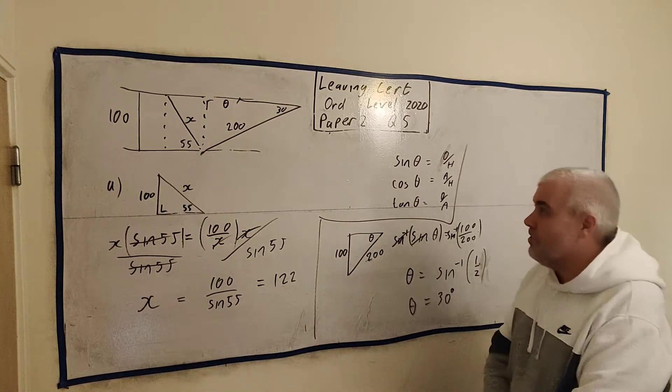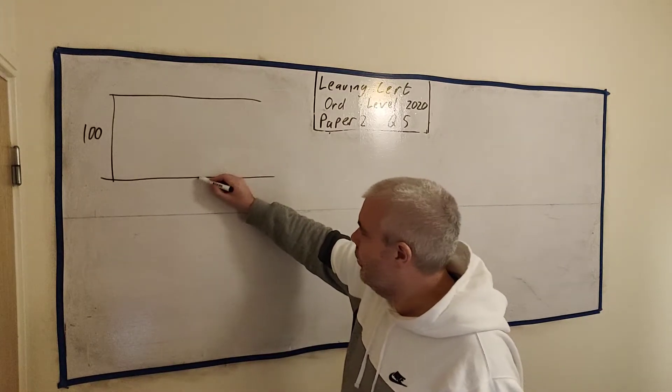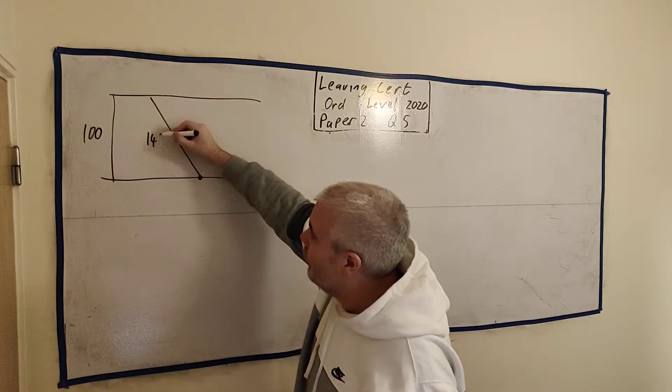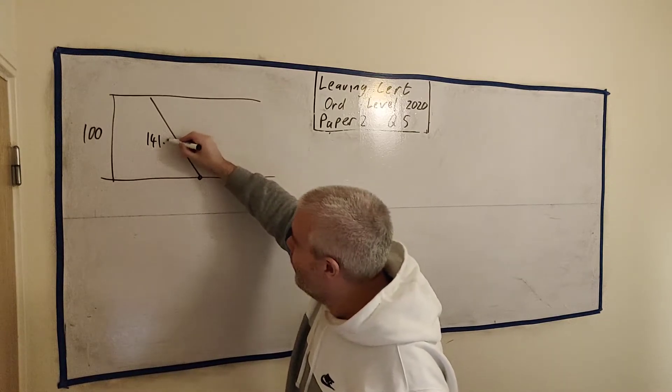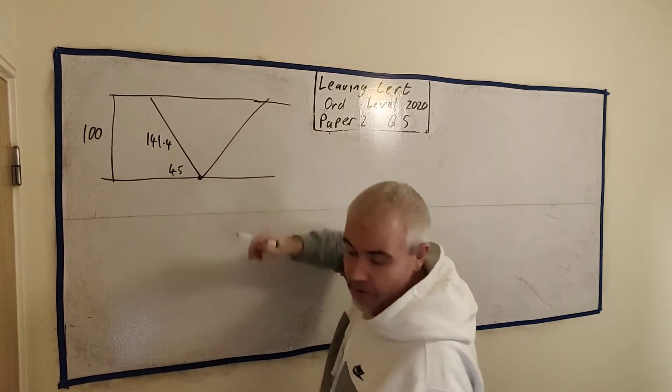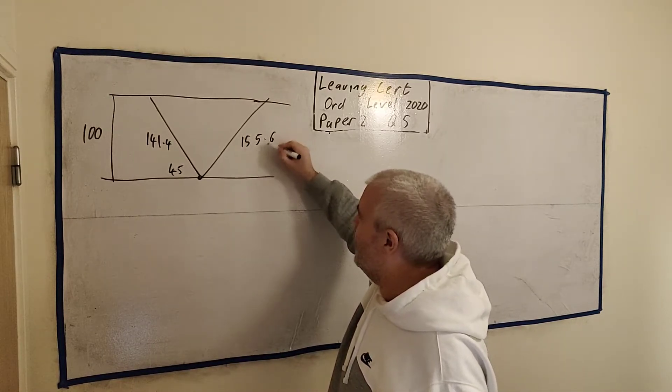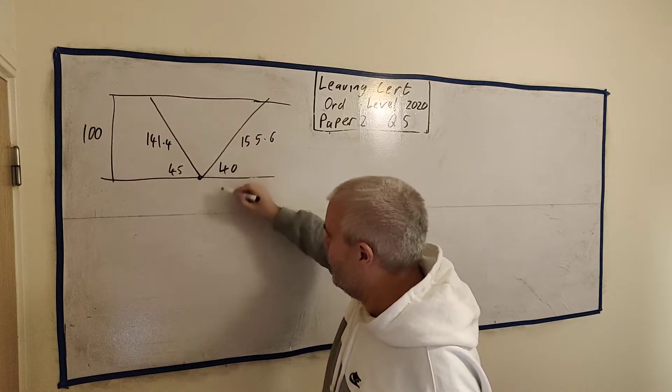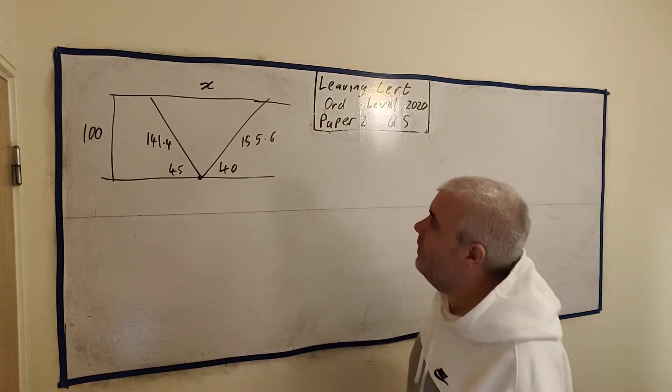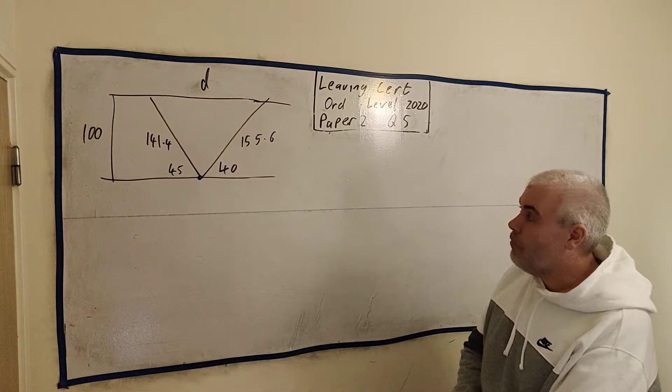All right, there's a part C to this question. Let me rub this out and we'll do that. Okay, part C. There's another story. It basically comes down to there's two swimmers here again. This time the person goes this way. We know they cover 141.4 meters. And we know their angle is 45. The other swimmer goes off this way. 155.6. And their angle is 40. And this time they want us to find this length here. We'll call it X. Or they call it D. Well, let me call it what they call it. So D.